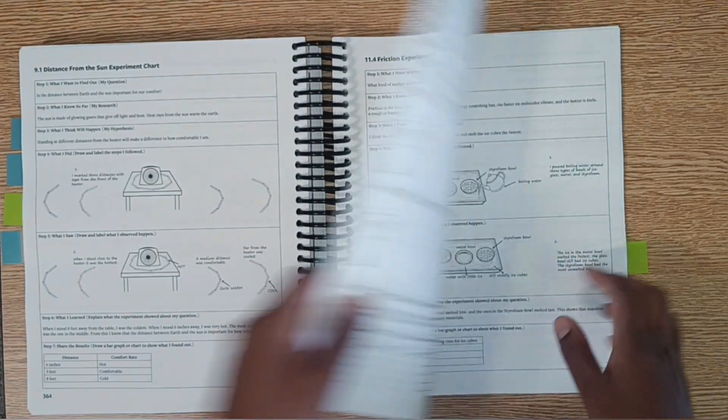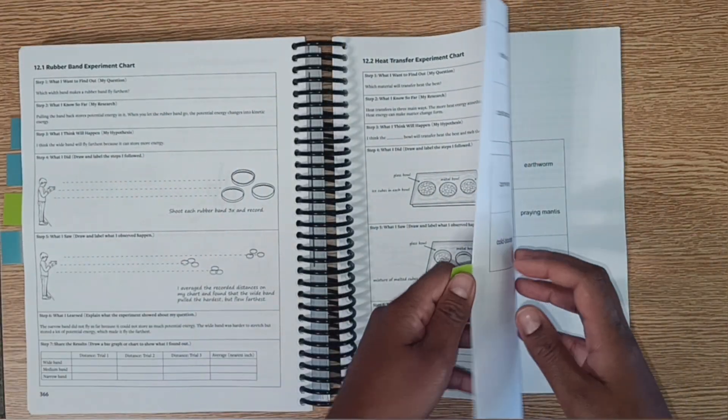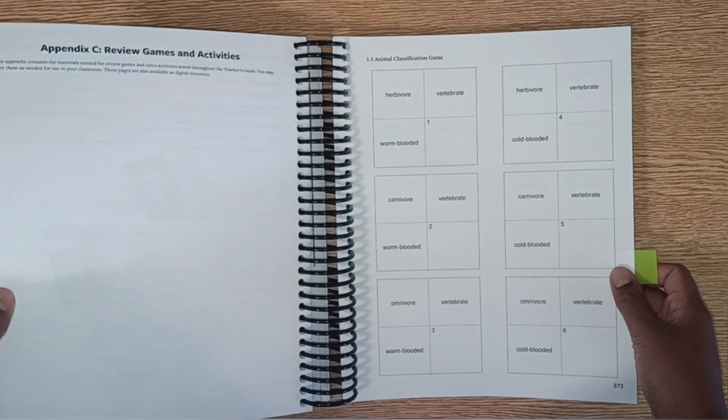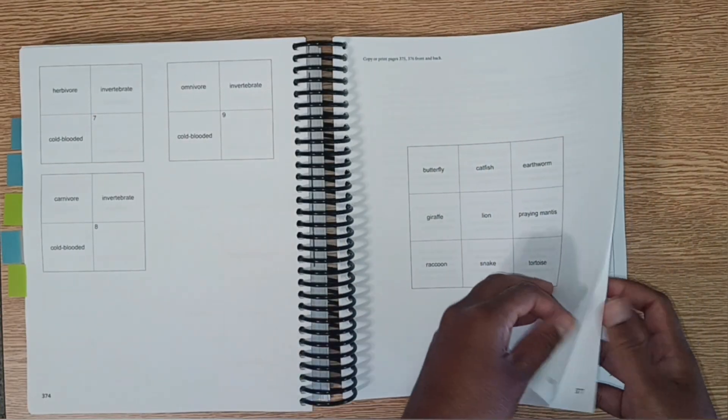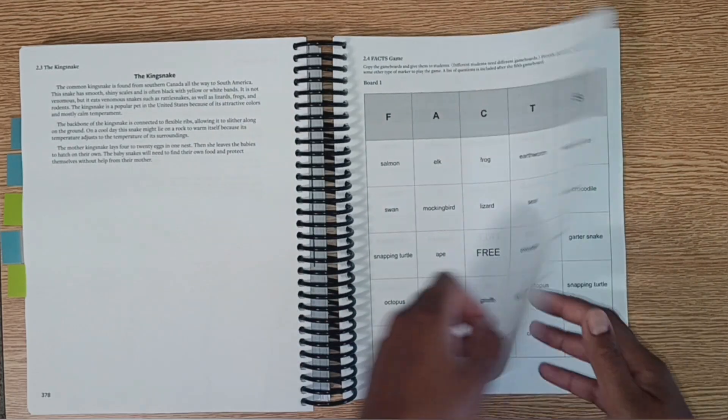There are lots of them here. And then there are games, review games and activities. These are all the sheets, the reproducible sheets for the games and the extra activities.